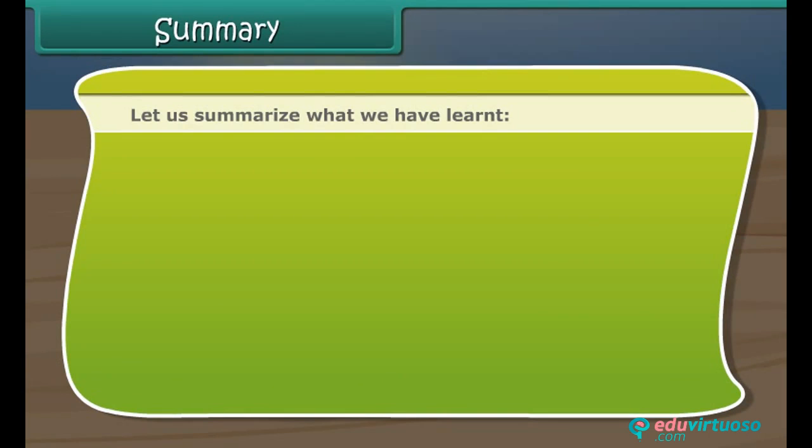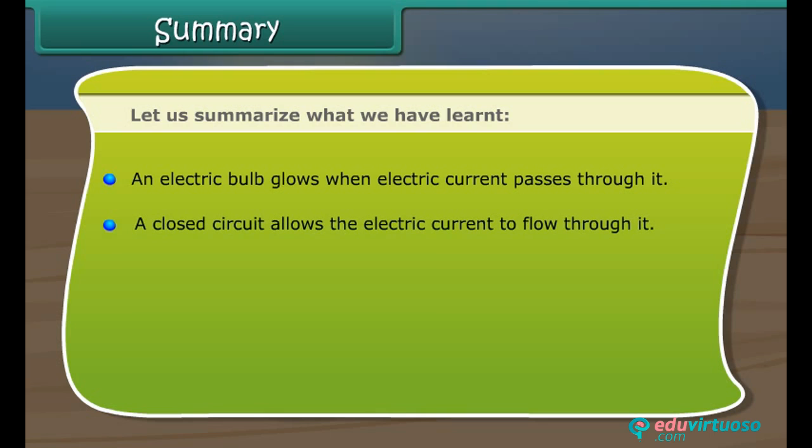Let us summarize what we have learned. An electric bulb glows when electric current passes through it. A closed circuit allows the electric current to flow through it. An open circuit is a broken circuit and the electric current does not flow through it. A switch is a device to close or open a circuit.